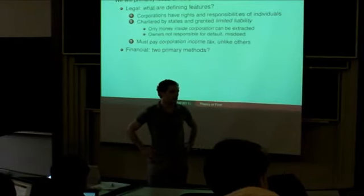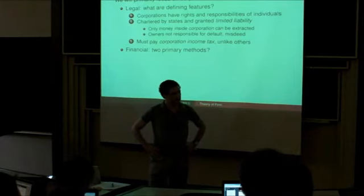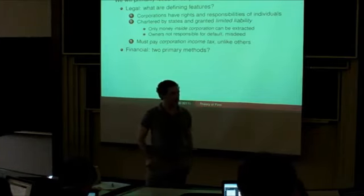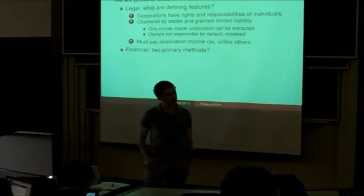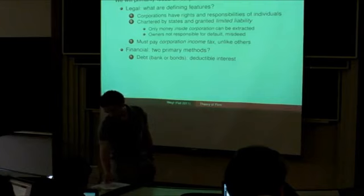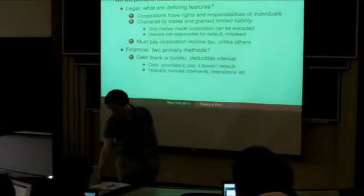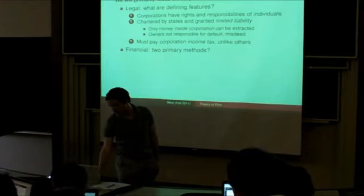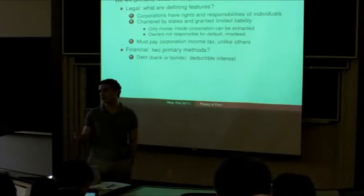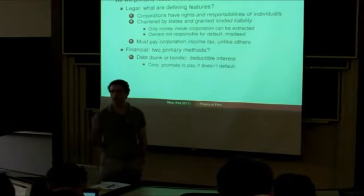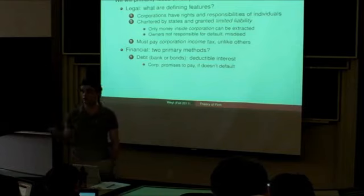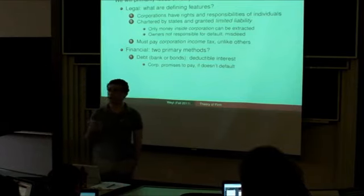The two main ways corporations finance themselves are equity — as one student mentions — and debt. Debt comes in two forms: bonds and bank loans. A bank makes a loan to you and you promise to repay it. A major benefit of taking out a loan is you can deduct from your corporate income tax the interest you pay, which greatly reduces the cost of debt financing. The corporation promises to pay back a certain amount; if it defaults, the bank can seize what the company owns.